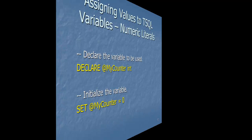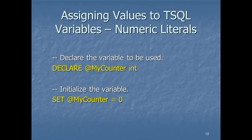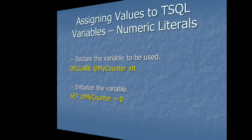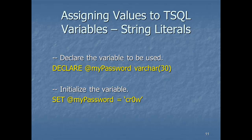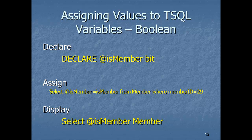Let's look at assigning values to different data types. This slide depicts how to declare @myCounter as an integer. The second statement assigns zero using a SET command. When dealing with integers or numeric values, there are no apostrophes around zero. In this example, we place apostrophes around the string because we declared @myPassword as a VARCHAR(30) — we could get a type mismatch error if we attempted to assign a numeric value or failed to include apostrophes when passing in a literal. Bit or boolean columns are treated the same, although true is represented as 1 and false as 0, so you would use 1 or 0 in a SELECT, UPDATE, DELETE, or WHERE clause.